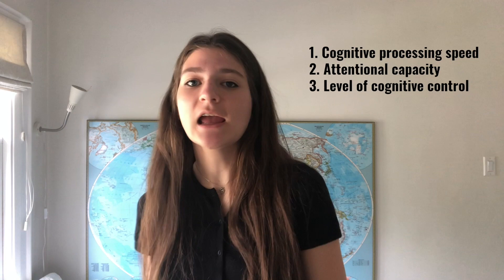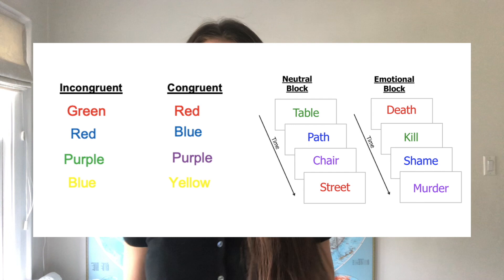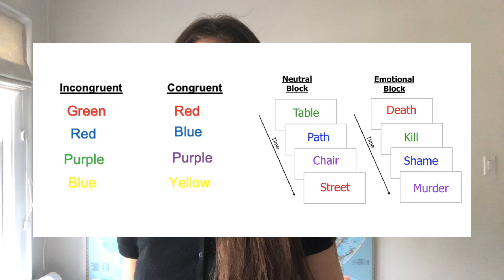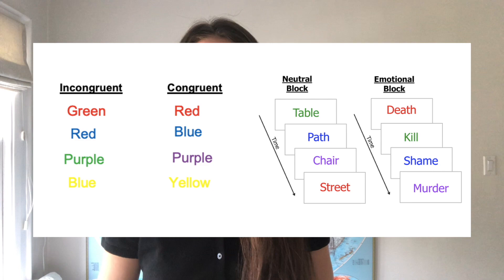So lastly, why does the Stroop test actually matter? There are many different applications. It can be used to assess an individual's cognitive processing speed, their attentional capacity, as well as their level of cognitive control. Some neurodevelopmental disorders like schizophrenia and autism have also been studied using this test. Beyond the color-word test, there are many different variations, such as the emotional Stroop test. In the emotional Stroop test, participants complete both the original test and a version where instead of color words there are words that are either neutral like chair or emotional like death. Research has shown that anxious people are likely to experience more interference with the emotionally charged words.